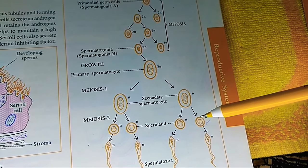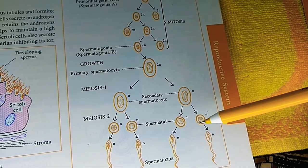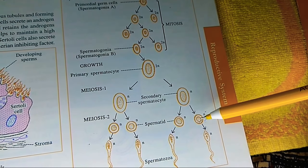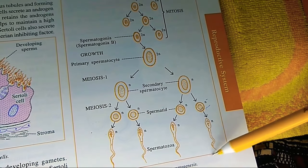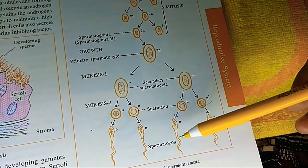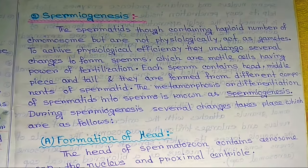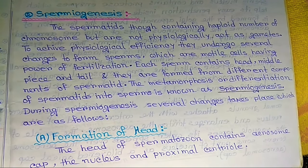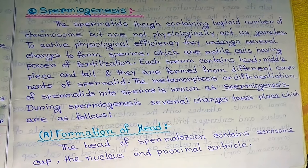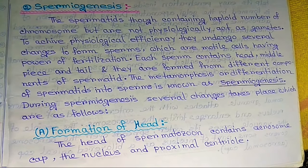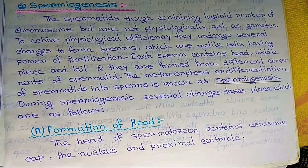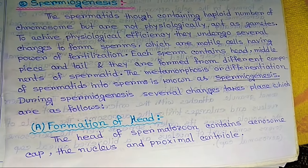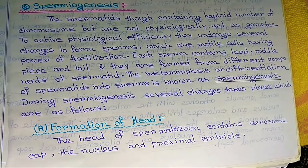The whole process of sperm formation ultimately produces spermatozoa, which are motile cells having the power of fertilization. Each sperm contains a head, middle piece, and tail, and they are formed from different components of the spermatid. The metamorphosis or differentiation of spermatids into sperms is known as spermiogenesis.